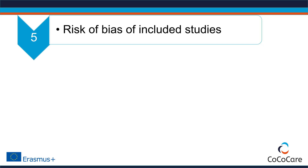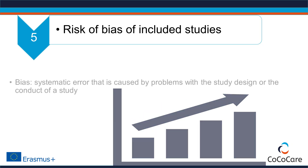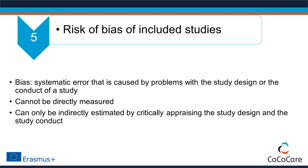Studies that meet inclusion criteria need to be critically appraised to assess whether bias could distort results. Bias is defined as a systematic error caused by problems with the study design or the conduction of a study. For example, poor randomization can cause bias, and lack of masking can also cause bias. Unfortunately, we cannot directly measure bias — we can only indirectly estimate the risk of bias by critically appraising the study design and conduct.